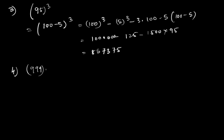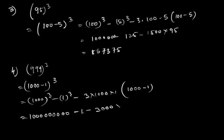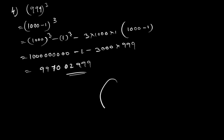The next question is 999³. We write it as (1000 − 1)³ and apply the formula: 1000³ − 1³ − 3·1000·1·(1000 − 1), giving 1,000,000,000 − 1 − 3000·999. Calculating this gives the final answer: 997,002,999.